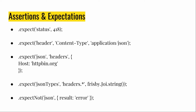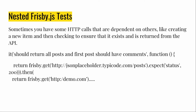An important area to look at is assertions and expectations — what kind of assertions Frisbee.js supports. It supports everything you can think of: checking status codes, verifying headers, checking JSON types, verifying that a response does or does not contain JSON. All the things you'd need for API testing are possible in Frisbee.js. For nested 'it' blocks, you can do return frisbee.get(url).then() and chain whatever comes next — for example, get a post's ID from the first request and pass it to the next request.